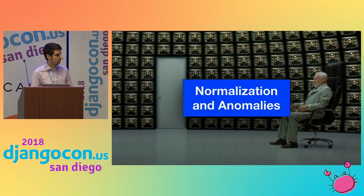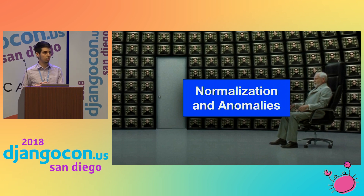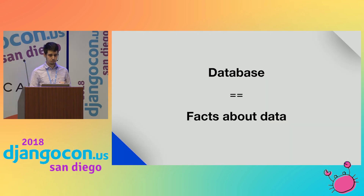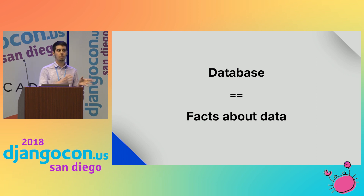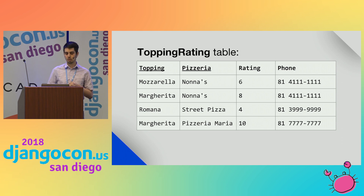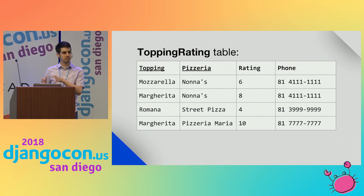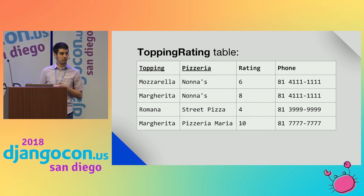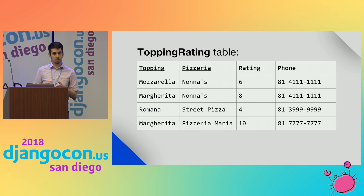We're going to talk about normalization. Normalization has everything to do with anomalies. The best way to think about a database is that it represents facts about data. For example, this table here — we have some toppings on some pizzerias, a rating for them, and the phone of the pizzeria. So it's the topping rating table.